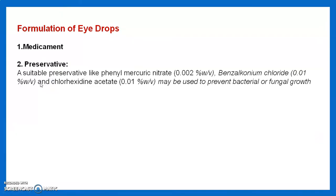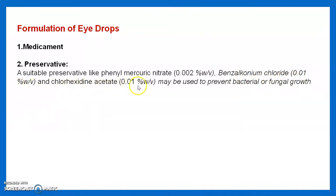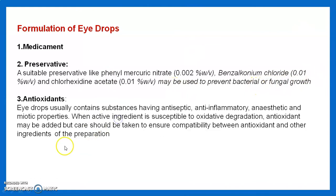Then we see the formulation of eye drops: medicament, then preservatives. This is also applicable to ointment. Preservatives like phenyl mercuric nitrate at a concentration of 0.002% w/v, and chlorhexidine acetate 0.01% w/v, may be used to prevent bacterial or fungal growth.